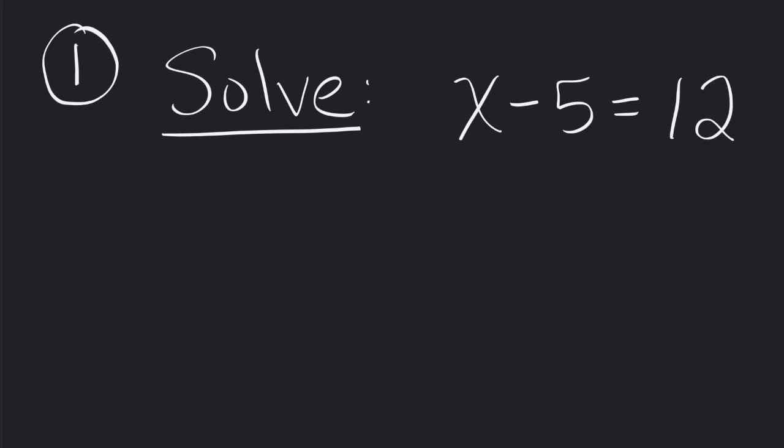Well, how do we go about doing that? It's pretty straightforward if we use this addition property of equality because it says I can now add 5 to both sides of this equation.